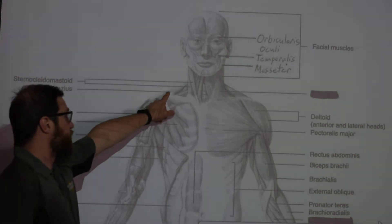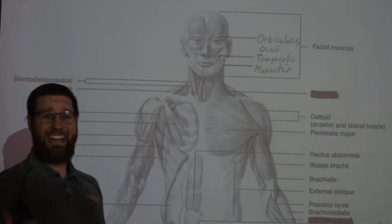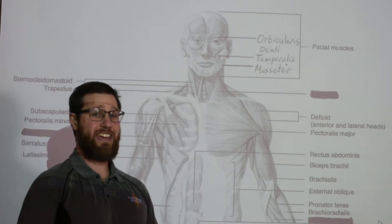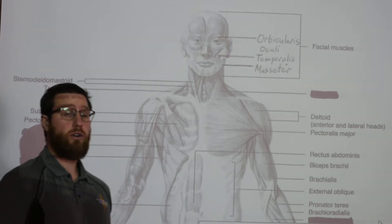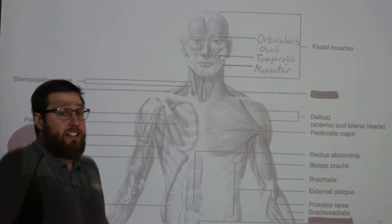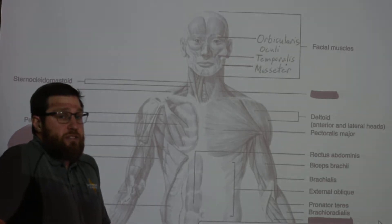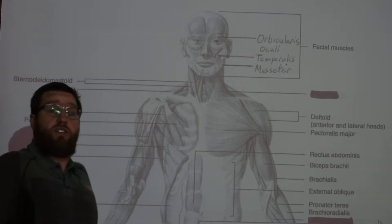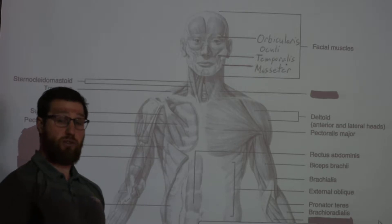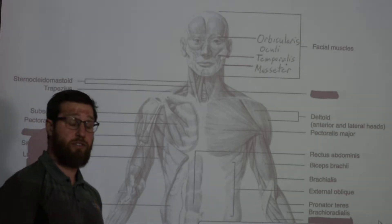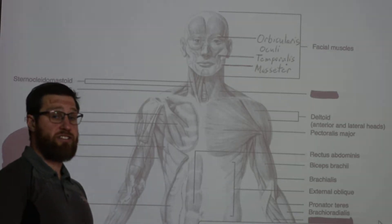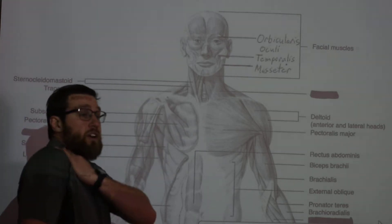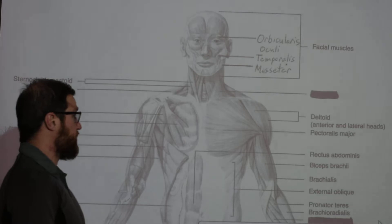Next is your trapezius, which is really a posterior muscle though we can see a bit of it on the anterior side. It is involved in elevating your shoulders, as well as retraction and depression of your shoulders. Different fibers handle those movements on the posterior side, but your trapezius is right at the top and is the prime mover for shoulder elevation.